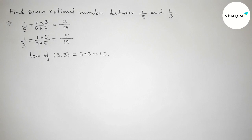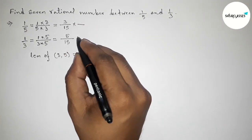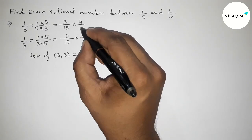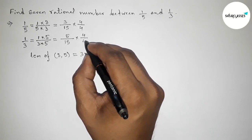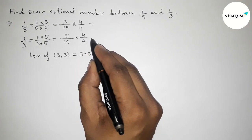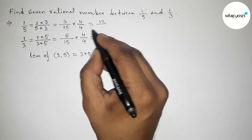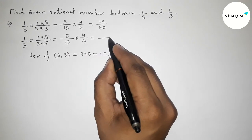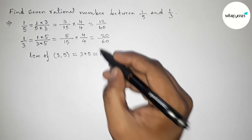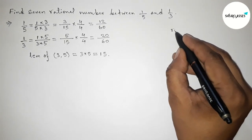Next we have to find 7 rational numbers, so we multiply again by a number up and down. Taking 4 up and down for both fractions. So this gives 12 over 60 and 5×4 over 15×4 is 20 over 60. Both denominators are now 60.